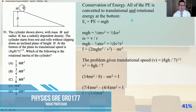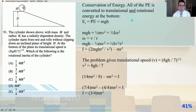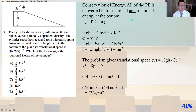We're on problem number 91 of Physics GRE GR 0177. The cylinder shown above with mass m and radius r has a radially dependent density. The cylinder starts from rest and rolls without slipping down an inclined plane of height h. At the bottom of the plane its translational speed is the square root of 8gh over 7. Which of the following is the rotational inertia of the cylinder?